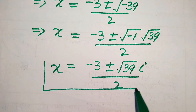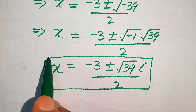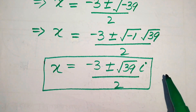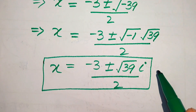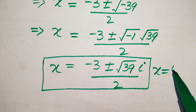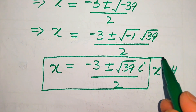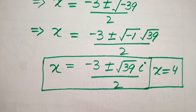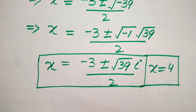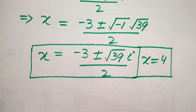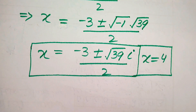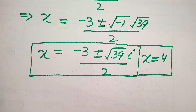These are the two complex roots of the given equation, and x equals 4 is the one real root. So these are the three roots of the given equation and this is the final answer. Thank you so much for watching — please subscribe to my channel for more videos.